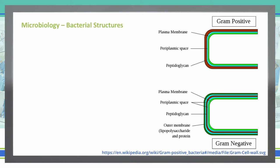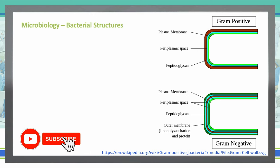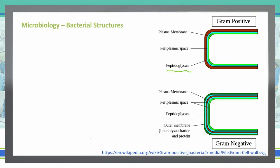We're going to compare and contrast gram-positive and gram-negative bacteria. On the surface, gram-positives have a very large peptidoglycan layer, which is a net-like structure. If you saw this in a 3D model, it would have cross-linkings — like a net. Gram-positives have this peptidoglycan layer that is very thick.